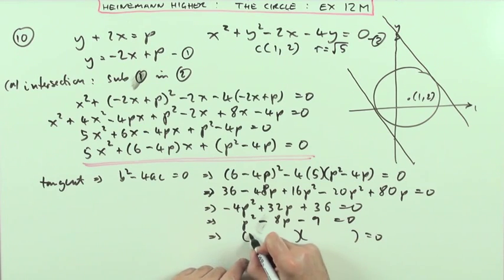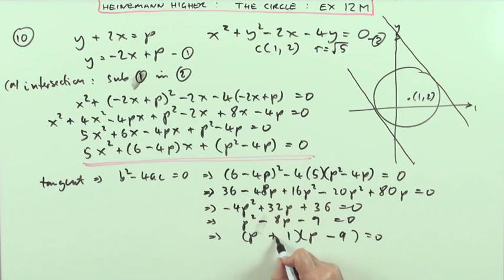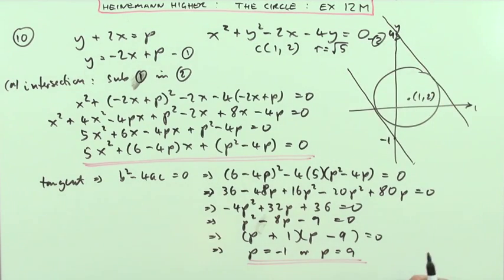Factorize that, you can see that's going to factorize, p times p, 1 times 9, must be negative 9 and plus 1. So here, finally, the values of p are p equals negative 1 or p equals 9, which in terms of the diagram means it either cuts at negative 1 or it cuts way up here at 9.